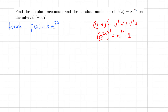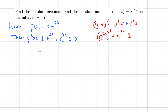Now let's find the derivative using the product rule. The derivative of the first factor — derivative of x is 1 — times e^(2x), plus the derivative of the second factor — derivative of e^(2x) is 2e^(2x) — times the first factor x. Simplifying, e^(2x) is common in both terms so we factor that out, leaving e^(2x)(1 + 2x).